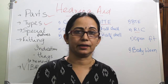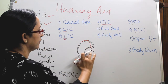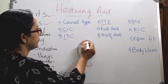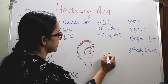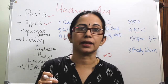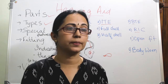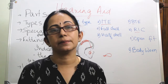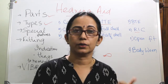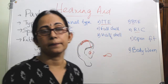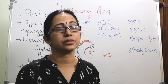RIC (receiver in the canal), also called mini BTE, is a smaller version of BTE. The main unit sits in the upper part of the ear connected to a very small ear insert kept inside the ear canal, making it less visible. Advantages include volume control, directional microphone, and easy manipulation. Disadvantages include wind noise pickup and risk of the receiver being clogged with wax. RIC is especially preferable for high frequency sensorineural loss, particularly in presbycusis.